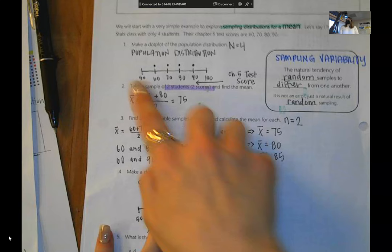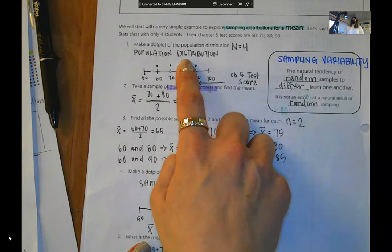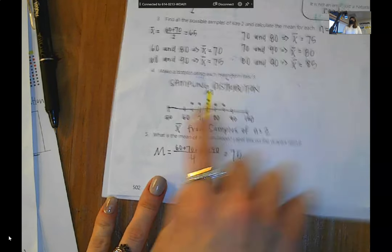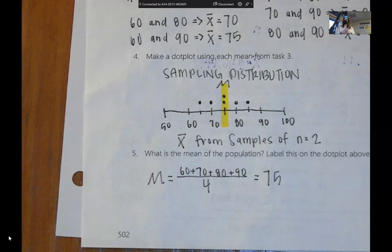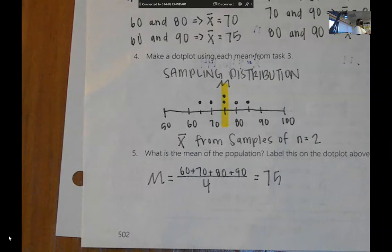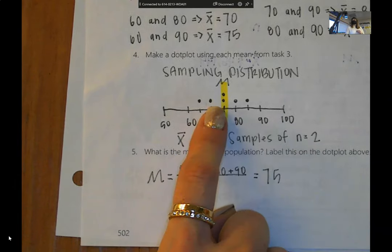When we take samples, we're often going to get different values from each sample. So if I take a sample of two of your test scores and get an average of 80, and then I take a sample of another two, the chances they're going to have an 80 is very small. That's called sampling variability. This is our population distribution. This is our sampling distribution.